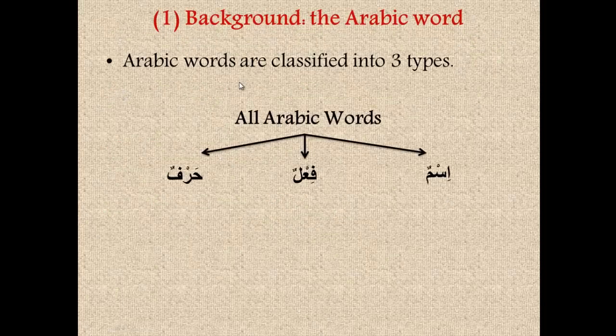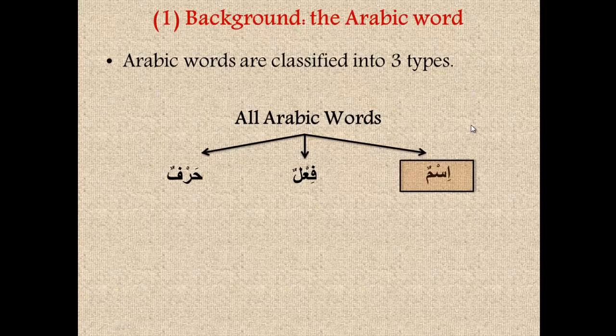All Arabic words are classified into three different types. If you take an Arabic word, it's going to fall under one of these three categories. It's either going to be an ism, a fi'l, or a harf.